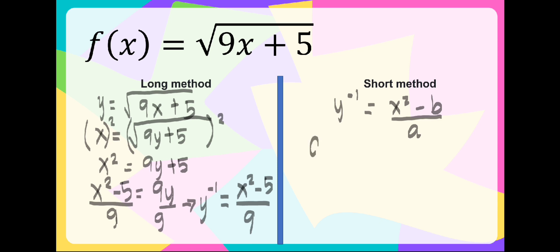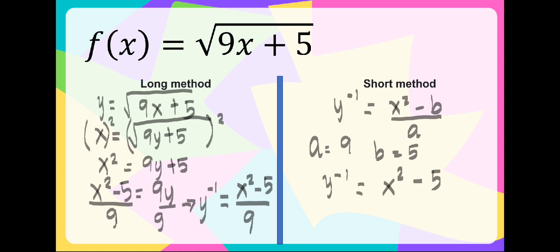So we have a is equal to 9 and b is equal to 5. Let us substitute the given values in the formula: the inverse of y is equal to x squared minus 5 over 9. As you can see, they have the same inverse.